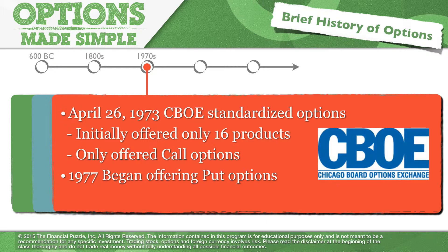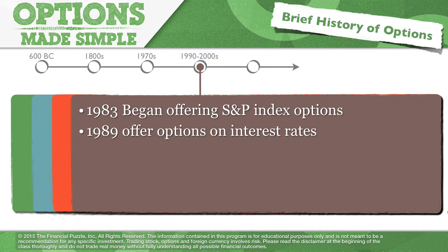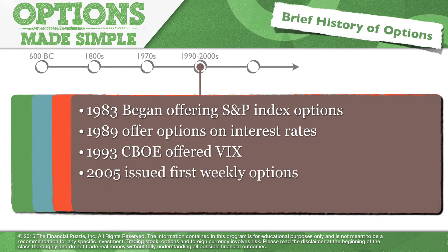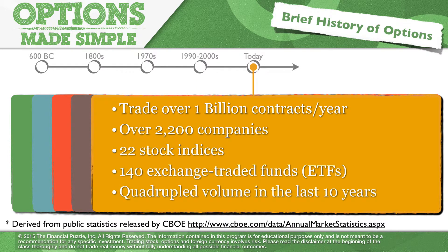From there, the history of options trading accelerated rapidly. By 1983, they began offering S&P index options. By 1989, they started offering options on interest rates. By 1993, CBOE started offering the VIX. In 2005, they first issued weekly options. Today, the world of options trades over 1 billion contracts a year — that is a lot of options.